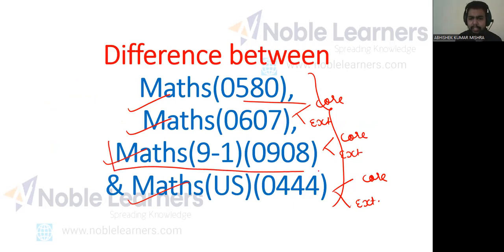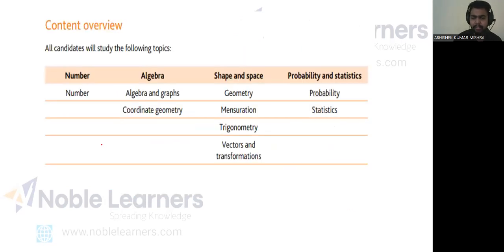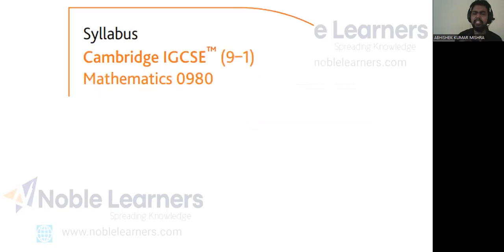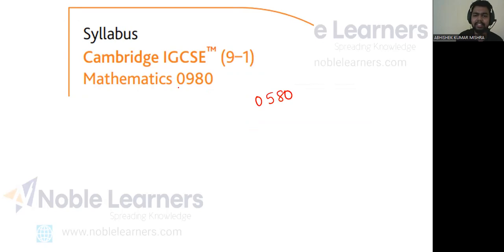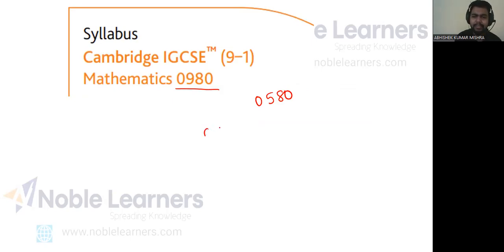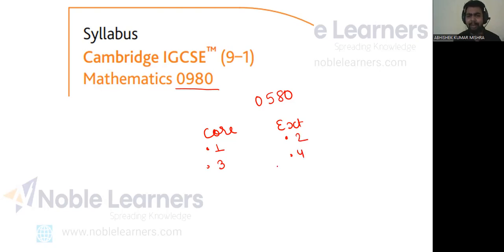Now let us understand what Mathematics 9-1 is. If you look at the syllabus of Mathematics 0580 — number, algebra, shape and space, probability and statistics — and compare it with Mathematics 9-1 (code 0980), there is no difference at all. The syllabus is exactly the same. The paper structure is also the same analogy: Core uses Paper 1 and 3, and Extended uses Paper 2 and 4. The same advice applies: a student who is good in Mathematics should go with Extended, and a student who is not very proficient should go with Core.